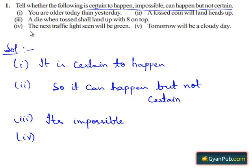Now moving to the fourth part, the next traffic light seen will be green. It can happen but not certain.